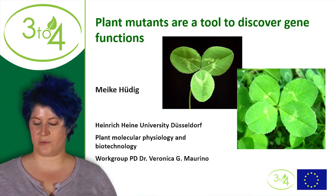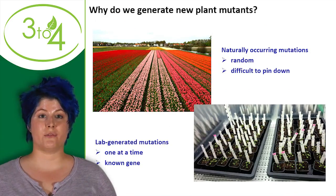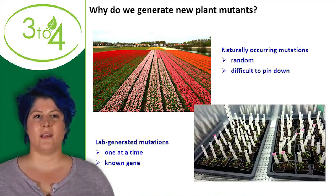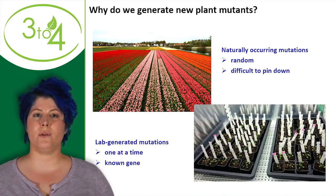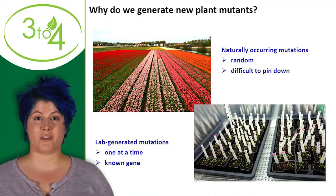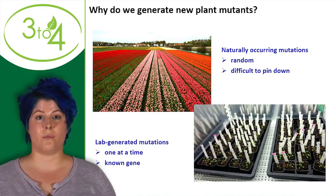Usually when we want to work with plant mutants we have to generate new ones. Here in the top left corner you see a tulip field from the Netherlands with very colorful flowers — each one is a variation or mutant that naturally occurred. But naturally occurring mutations are pretty random and especially difficult to pin down to a single gene, so in our lab we carefully generate one mutant at a time that hits a known gene.